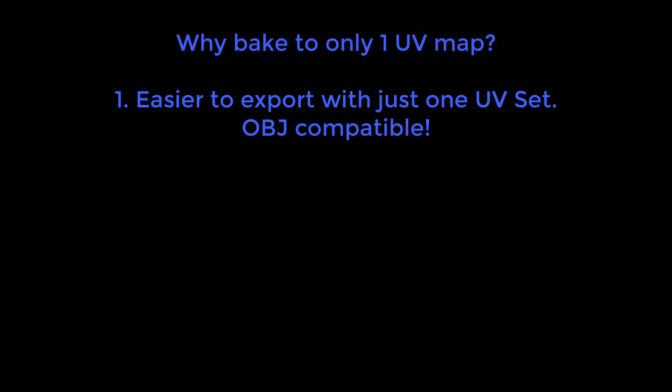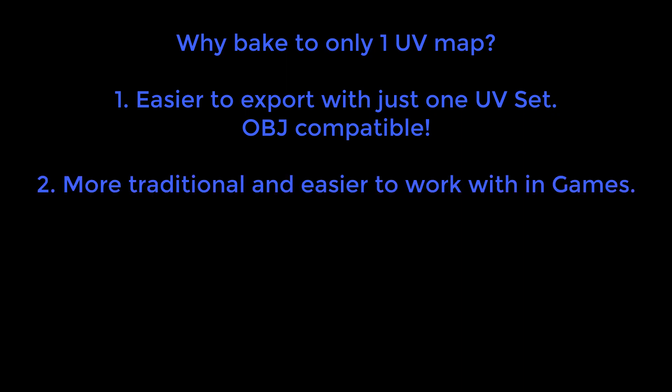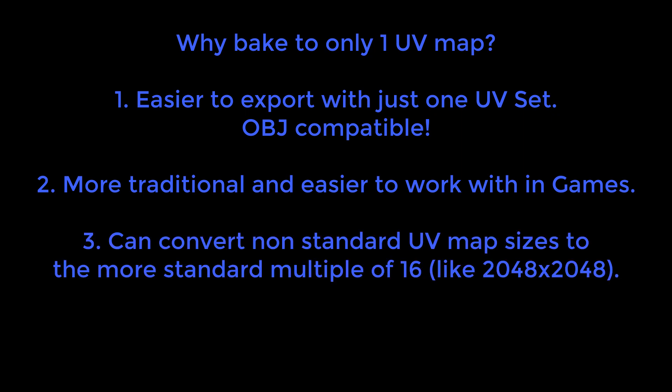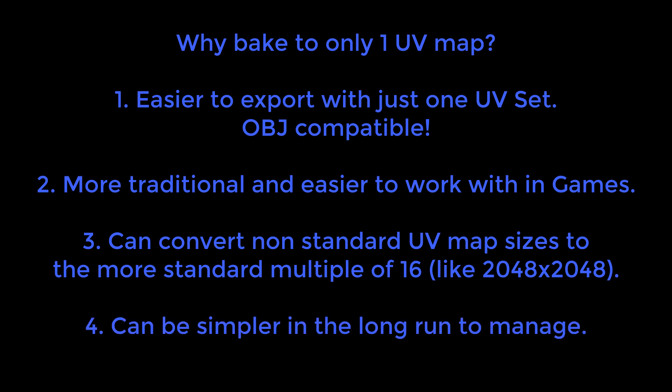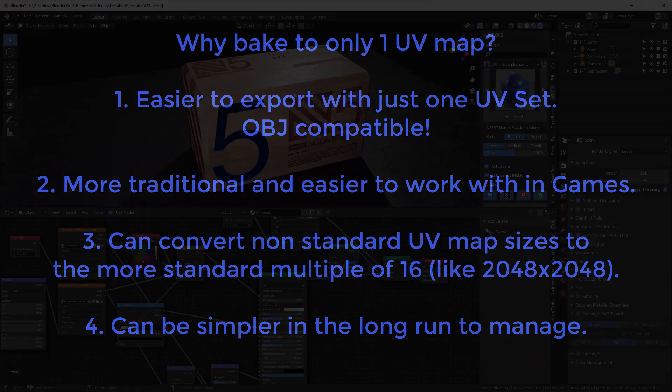Sometimes it's just easier to export objects with one UV set. In fact, you can export as OBJ as well when you do that. The other thing is it's easier to create game assets with only one UV map. Also, a lot of times we want our UV maps to have a resolution that's a multiple of 16, like 256 by 256 or 1024 by 1024. GPUs and game engines generally prefer resolutions that are multiples of 16. And finally, it can be just simpler in the long run if you're trying to manage a lot of different materials with lots of different UV maps.